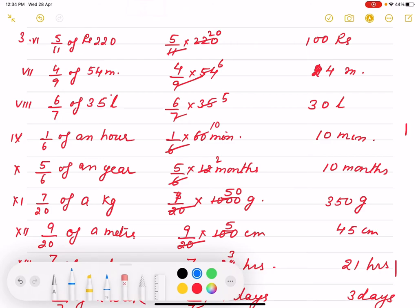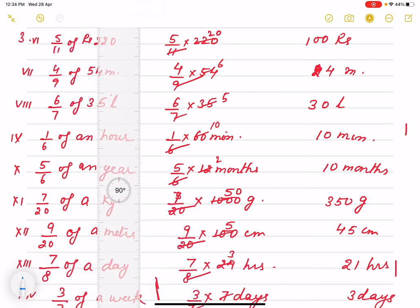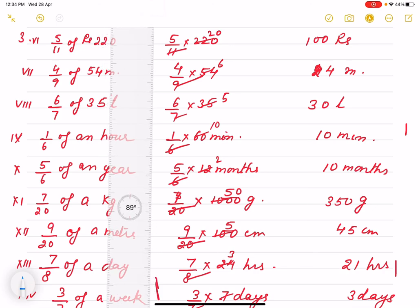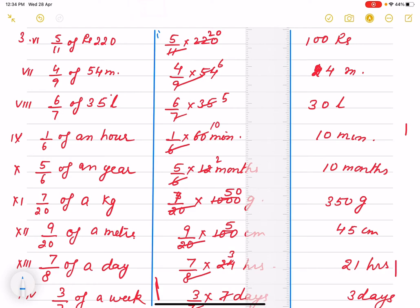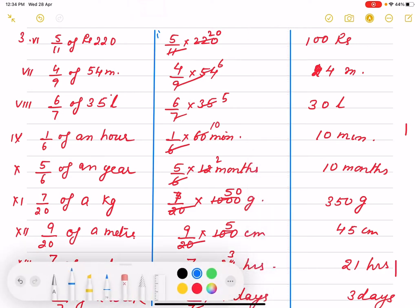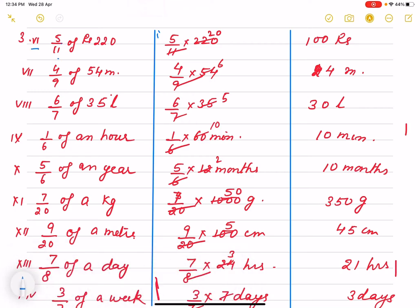Now, this question where units are also given and we have to find out the value. Here as units are given, we have to write answers with units also. So we start with question number 3, 6 part, which I have given: 5 by 11 of 220. Of means multiplication sign. So 5 by 11 into 220, 11, 2-ja and 0, so 100 rupees. 4 by 9 of 54 meter, so 4, 6, 24 meter. 6 by 7 of 35 liter, so 7, 5-ja and 30 liter, 6, 5-ja, 30.